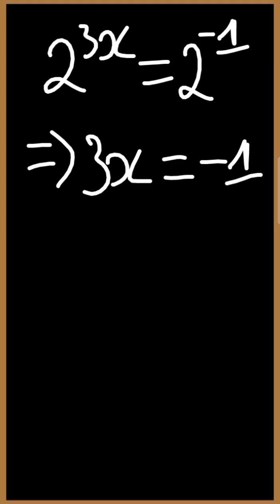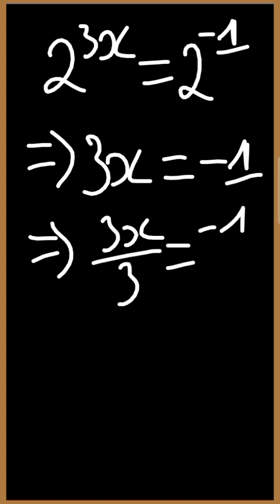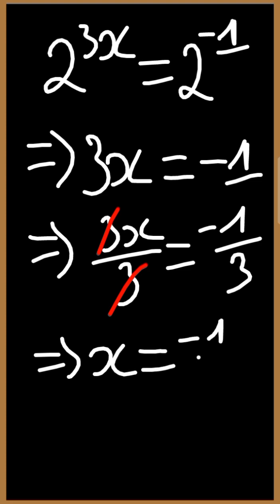For us to get the value of x we are going to divide both sides by the coefficient of x which is 3. Divide 3x by 3 is equal to negative 1 divided by 3. The threes will cancel. This will give us x to be equal to negative 1 third.